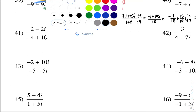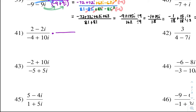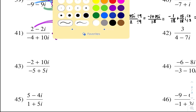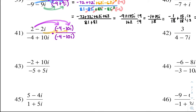Problem 41. Multiply by the conjugate of the denominator, with the opposite sign — negative 4 minus 10i. So multiply top and bottom by that. Distribution: distribute 2 to both, distribute negative 2i to both, and distribute negative 4 to both, and 10i to both. So: 2 times negative 4 is negative 8, 2 times negative 10i is negative 20i. Orange: negative 2i times negative 4 is positive 8i, and negative 2i times negative 10i is positive 20i squared.